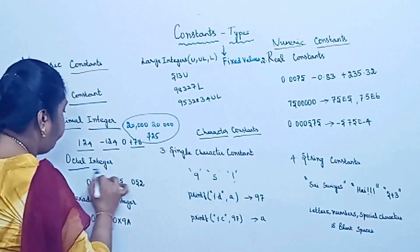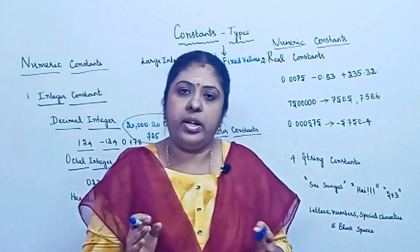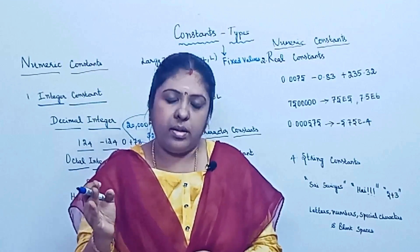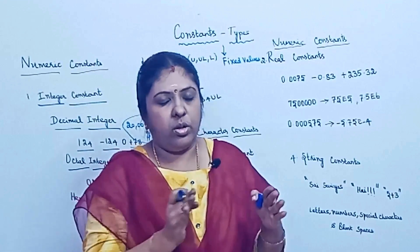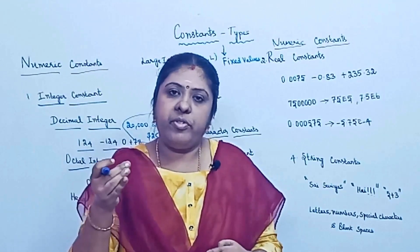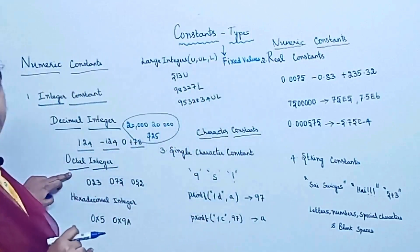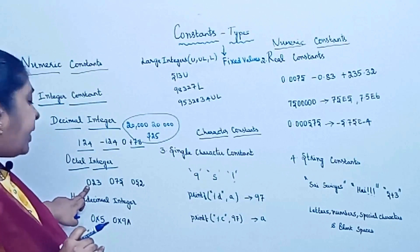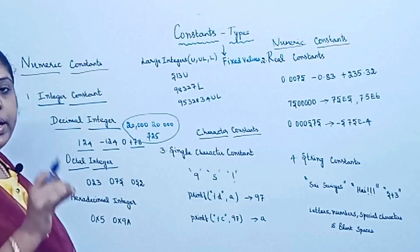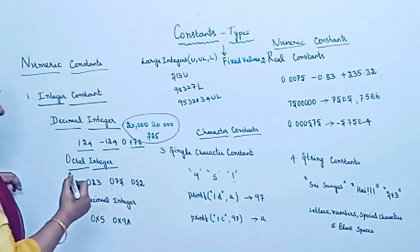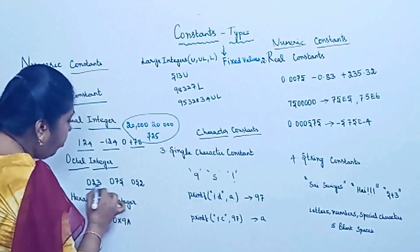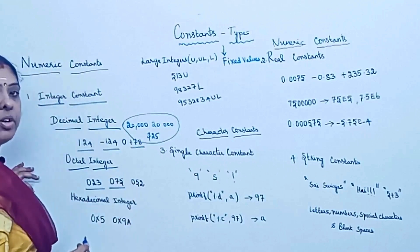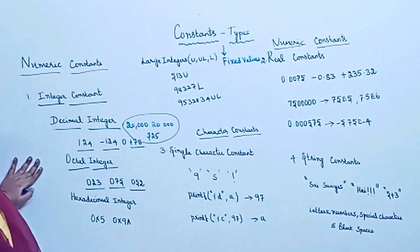Next comes the octal integer. Octal numbers consist only of digits from 0 to 7 — other numbers are not allowed. To differentiate between a decimal integer and an octal integer, the octal integer is preceded with a 0. Any number preceded with a 0 is octal, and only digits 0 to 7 are valid — 8 and 9 cannot be used. Valid octal examples include 023, 0075, and 052.